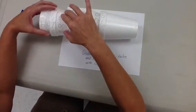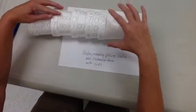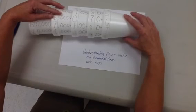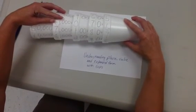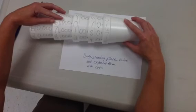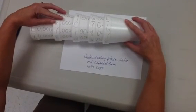So for example, my same number 67,187, they can stretch the cups out when they get them lined up and see the different place value places there.